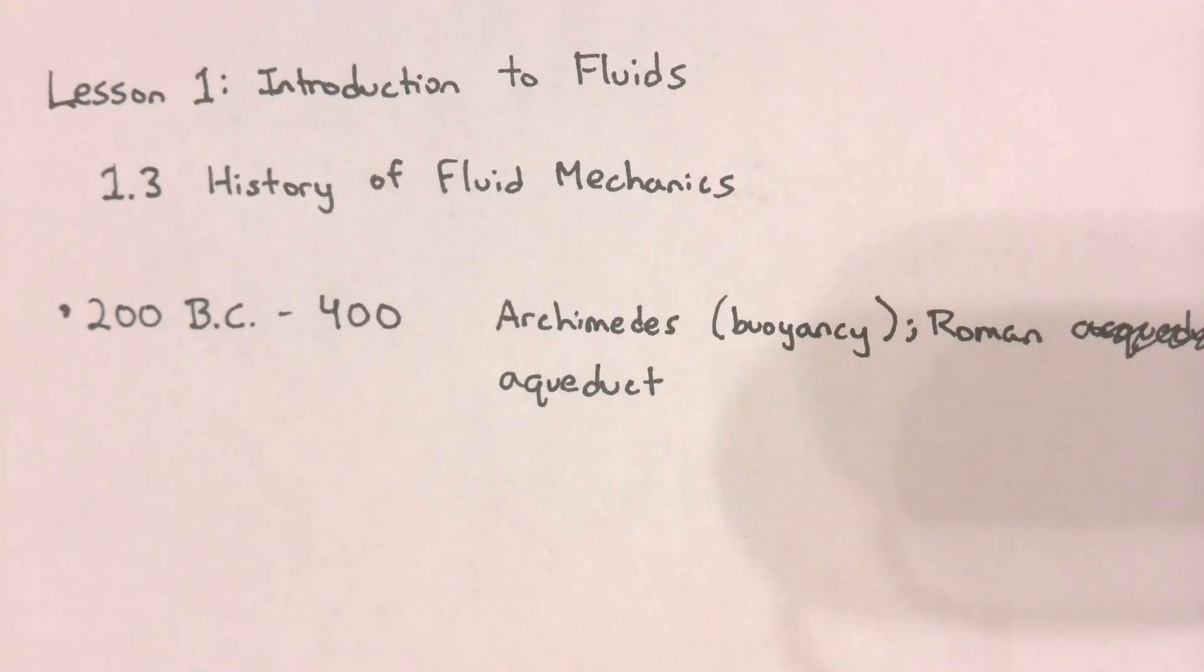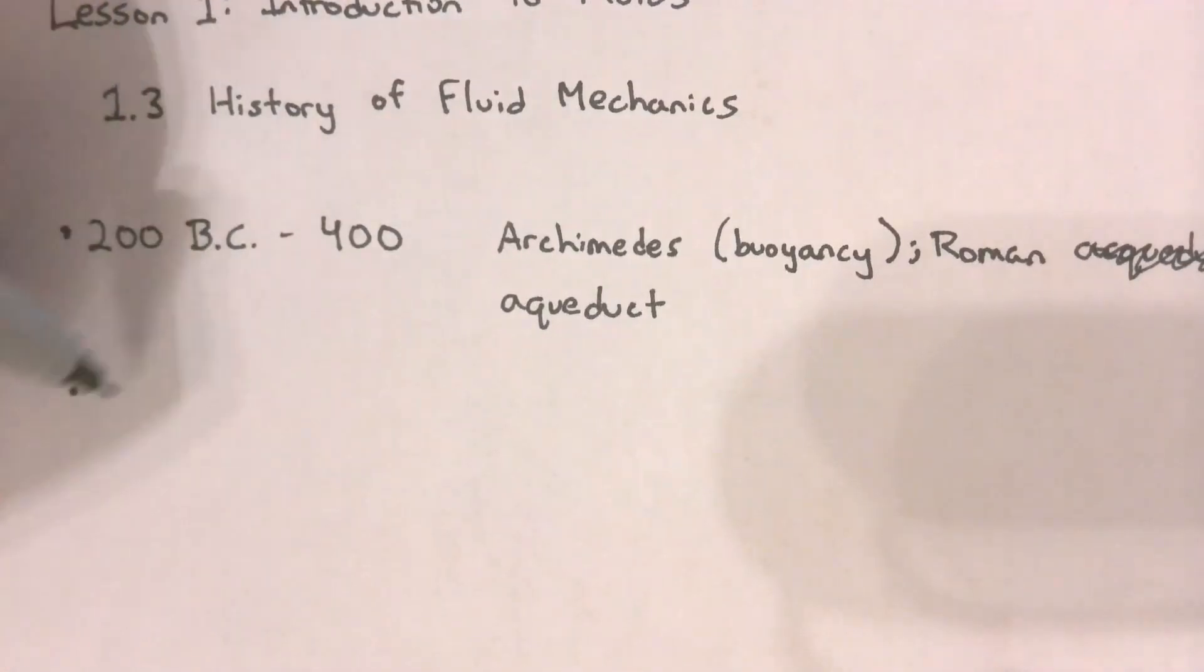Following Archimedes's theoretical success, the Romans used fluid mechanics principles to help build their cities. One such example is the Roman aqueduct. You can read all about it online, but it is something that I feel every fluid mechanics lecture should touch on because it is one of the important structures of antiquity that relies heavily on fluid mechanics.